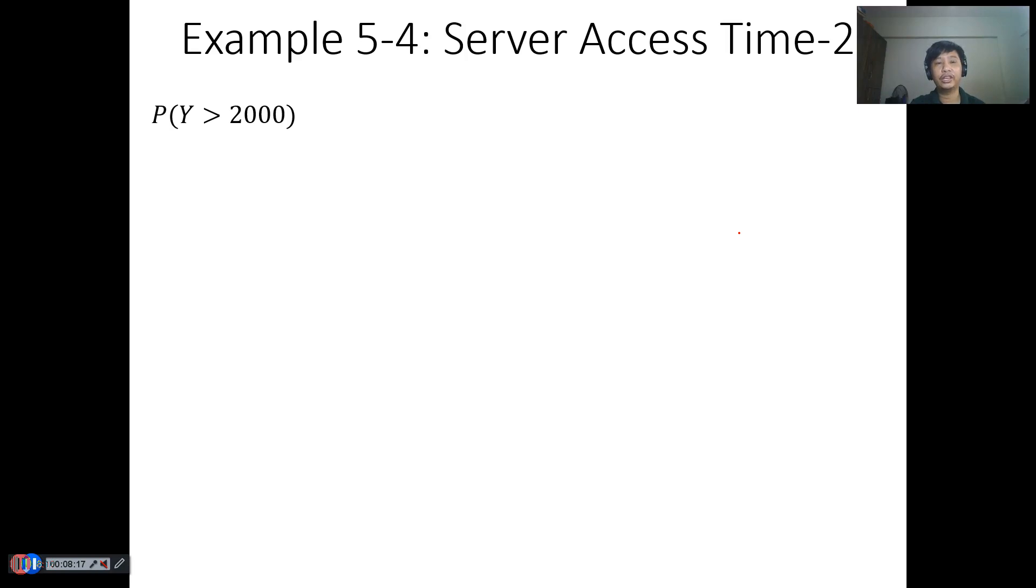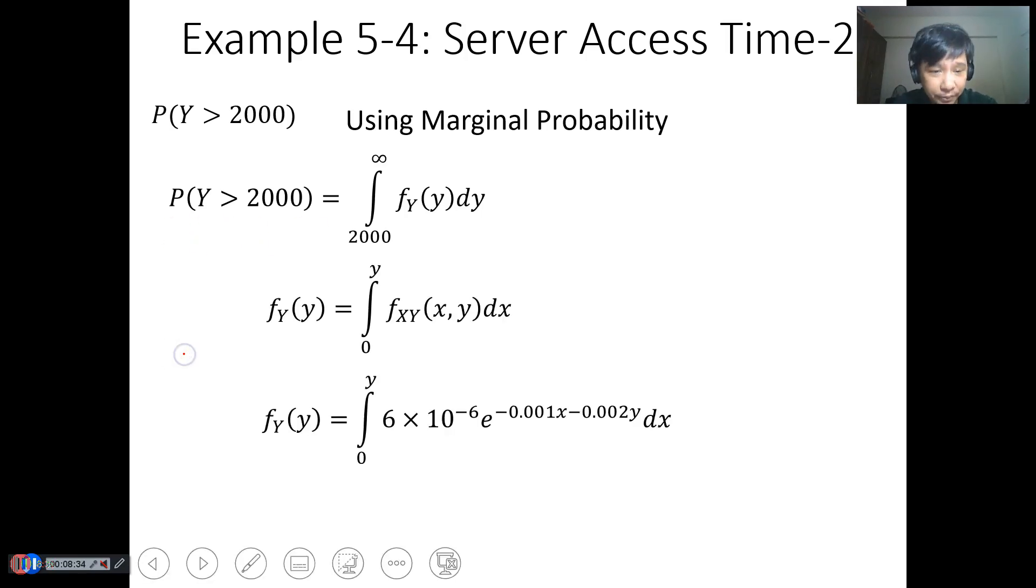Basically, you need to see it for joint probability distribution. But we can use marginal probability distribution. In this example, Example 5-4, we want to determine P(y greater than 2000). Instead of doing two integration sets, let's utilize marginal probability. For marginal probability, we need to evaluate from 2000 to infinity for f(y)dy. So we need to get this function.